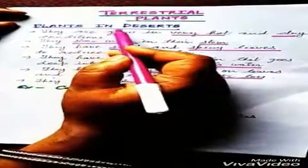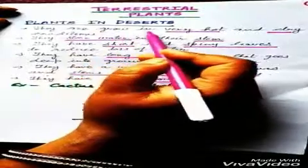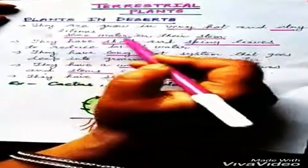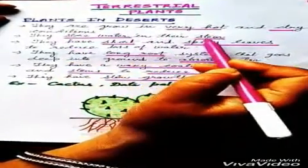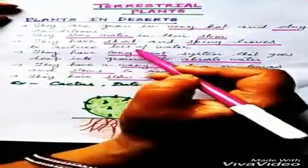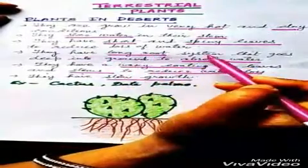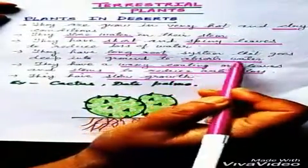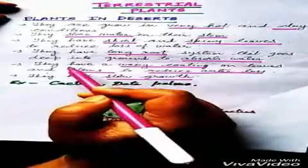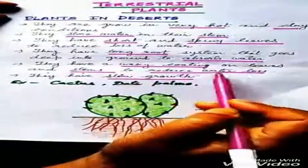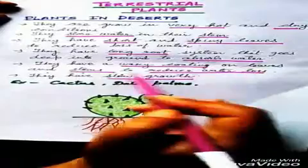First, plants in the desert. They grow in very hot and dry conditions. They store water in their stems. They have short and spiny leaves to reduce loss of water. They have a long root system that goes deep into the ground to absorb water. They have a waxy coating on leaves and stems to reduce water loss.